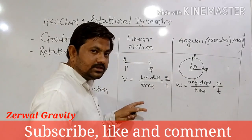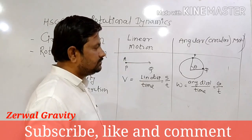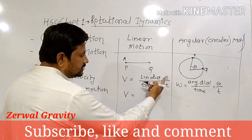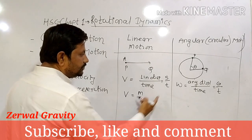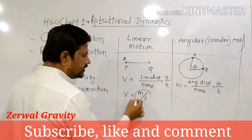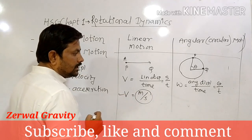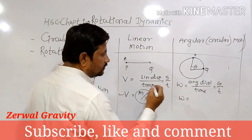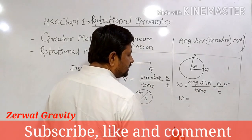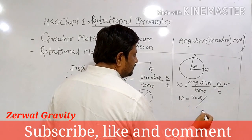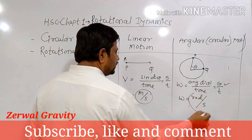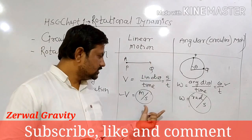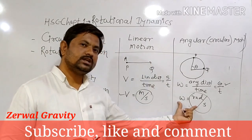Due to the difference between linear and angular motion, the units of velocity change. For linear velocity, displacement is measured in meters and time in seconds, so the unit is meter per second. But for angular velocity, the SI unit is radian per second, since angular displacement is measured in radians and time in seconds. The concept is the same, but due to the difference in motion, the units of the quantity change.